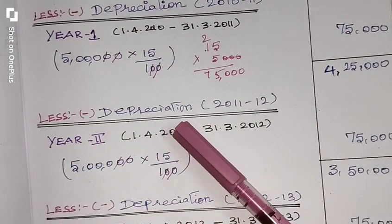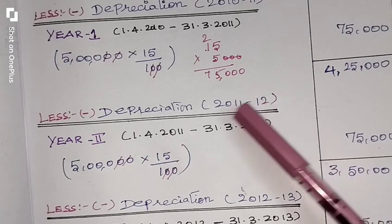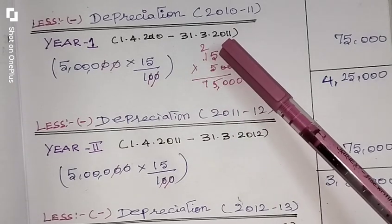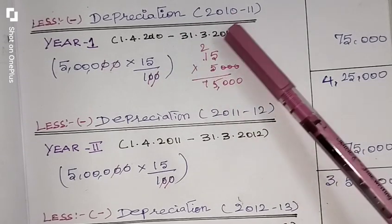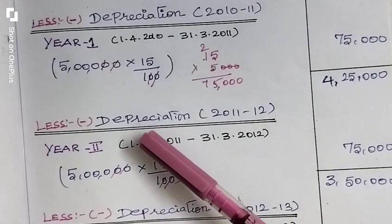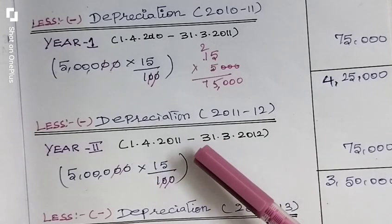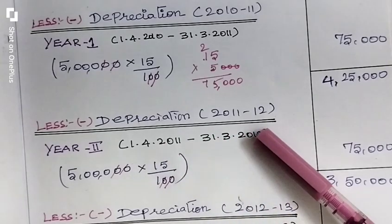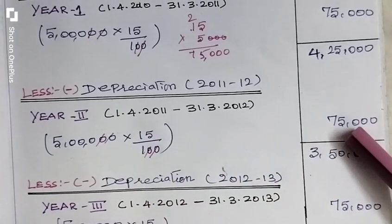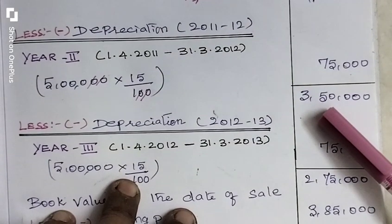Now we find the second year depreciation for 2011-12. The opening accounting period is 1st April 2011 and the closing accounting period is 31st March 2012. We calculate 15% on Rs. 5,00,000, which gives Rs. 75,000. We subtract Rs. 75,000 from Rs. 4,25,000 and we get Rs. 3,50,000.